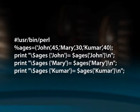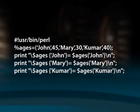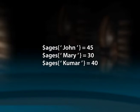For example, the code given here is: %ages = (John, 45, Mary, 30, Kumar, 40). Print $ages{John}, print $ages{Mary}, and print $ages{Kumar} produces the following output: $ages{John} = 45, $ages{Mary} = 30, and $ages{Kumar} = 40. Here we define a hash named ages initialized with key-value pairs where John, Mary, and Kumar are keys and 45, 30, and 40 are the respective values. We print the values by specifying their keys within curly braces.